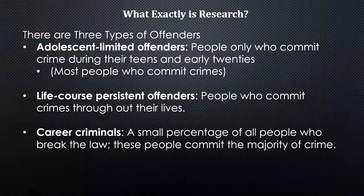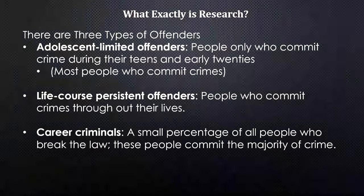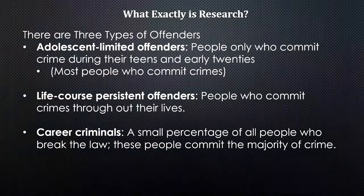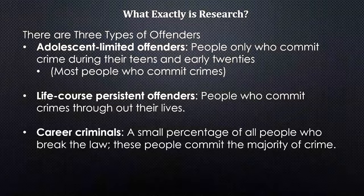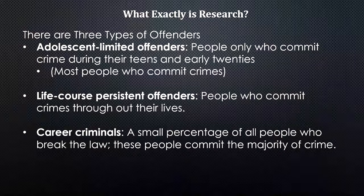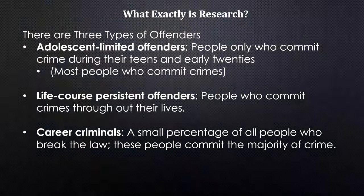When talking about social forces, a good example is types of offenders — types of people who break the law. We can break them up by age into three categories: adolescent limited offenders, life course persistent offenders, and career criminals. Adolescent limited offenders are people who only commit crime during their teens and early 20s. Looking at crime statistics, the vast majority of people who commit crime are adolescent limited offenders — it's the dumb things we do when we're young.